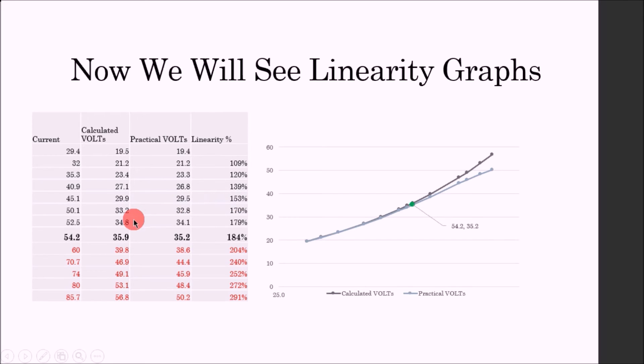So almost 153 percent linearity that we have reached. So 45 about 29 gives you 153 percent. At 54 it is expected to have 35.9 volts but we got 35.2, so almost 184 percent. And after 60 if you see there is voltage difference started.